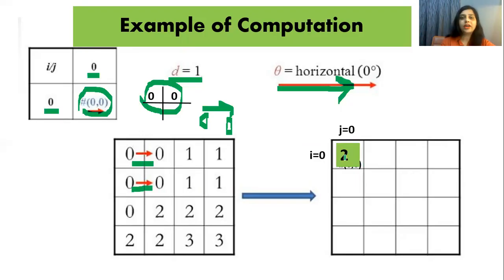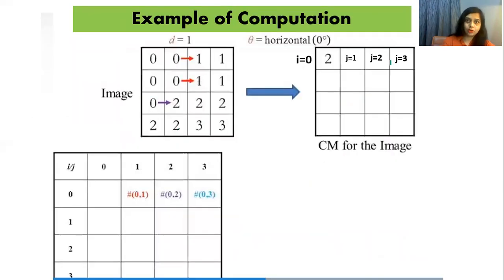This is how you enter values into the co-occurrence matrix. Now let's do this for other pairs.